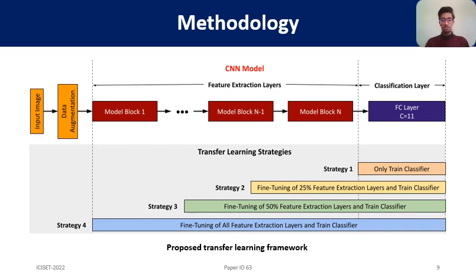I now present our transfer learning methodology. From the left, we feed an image resized to a fixed dimension and transformed with data augmentation. The transformed image is fed into the CNN layers. We apply transfer learning with four strategies. In the first strategy, we only train the classification layer. In the second, we train the last 25% of CNN layers including the convolutional and classification layers. In the third, we train the last 50% of CNN layers and the classification layer. In the fourth, we train all layers in the CNN. Please read our paper for details.